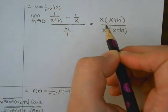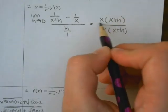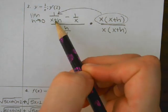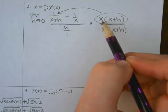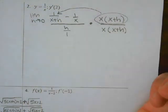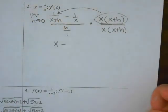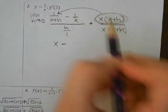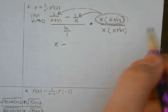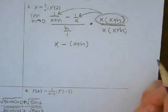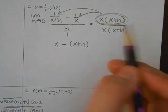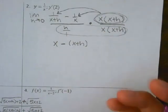So what do we do next? You take 1 over (x+h) and multiply it by x times (x+h). The (x+h)'s cancel and what does it leave behind? An x. And when we take 1 over x and multiply by x(x+h), the x cancels with the x, and what are we left with? (x+h). And I have to make sure to put that in parentheses because the whole group is being subtracted.